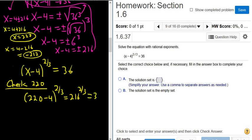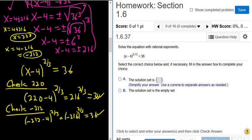Boom, like a pro. We're pros. Let's check negative 212. So we get negative 212 minus 4 to the 2 thirds, that's negative 216 to the 2 thirds. That should be the same, so 36. So everything is okay. Hope that made sense.